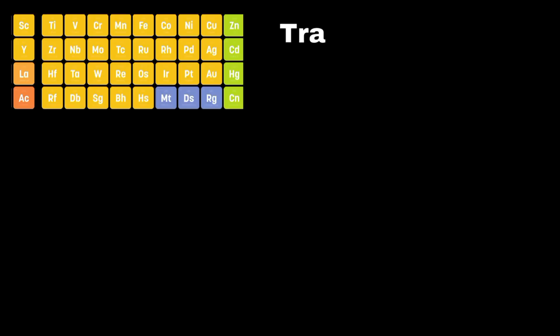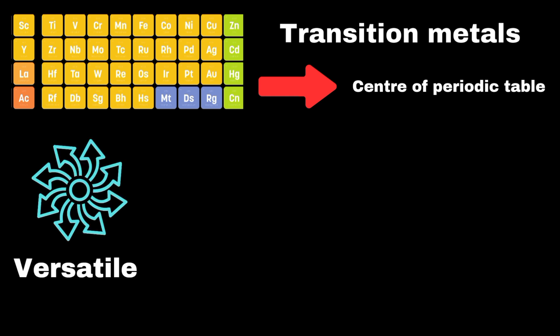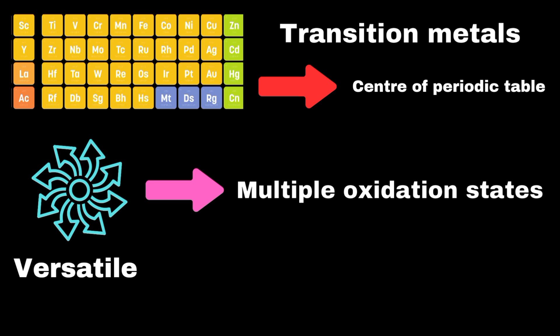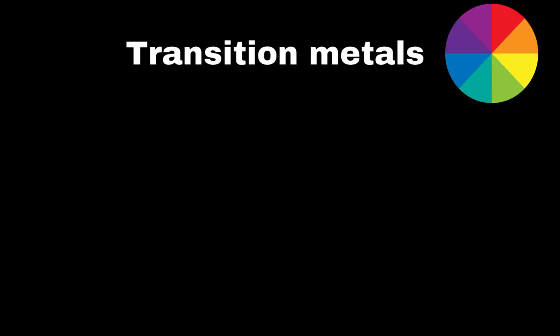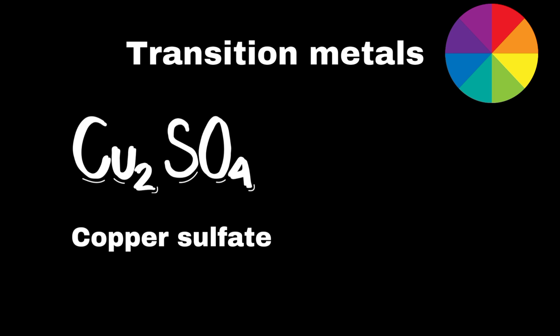D block elements, also called transition metals, are found in the center of the periodic table. They are versatile due to their ability to form multiple oxidation states and complex ions. Examples include iron, copper, and gold. These metals are usually hard, have high melting points, and are excellent conductors of electricity. Transition metals are known for their colorful compounds, such as the deep blue of copper sulfate.